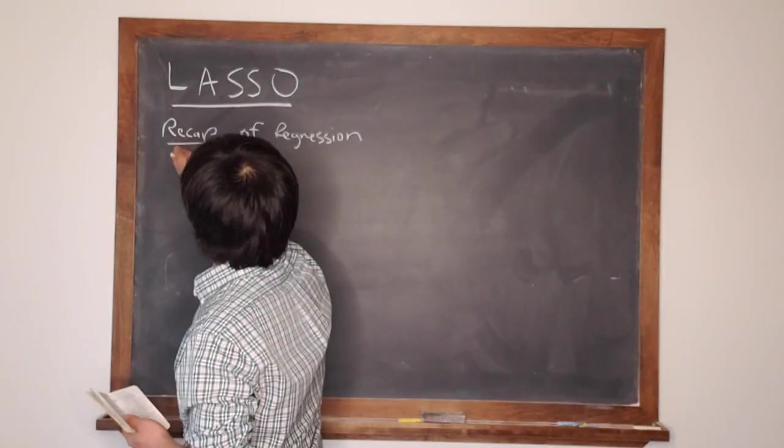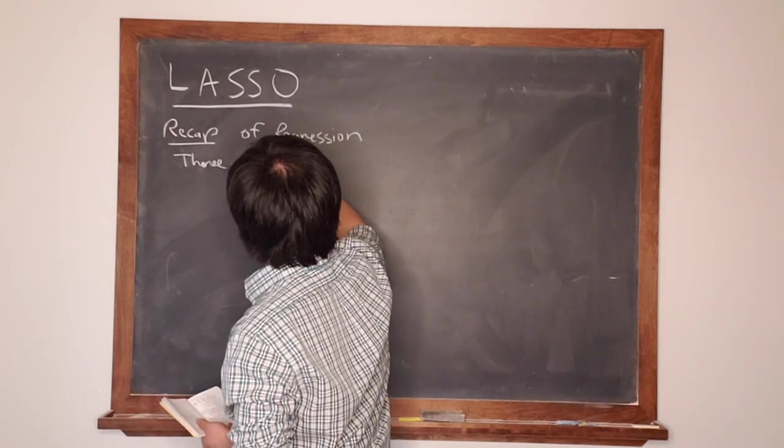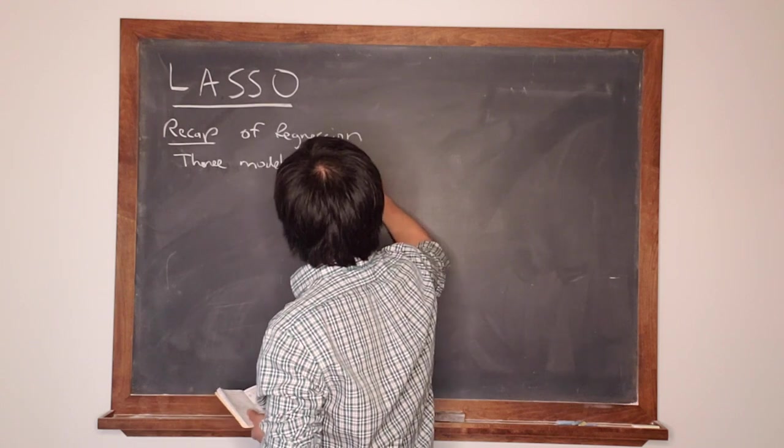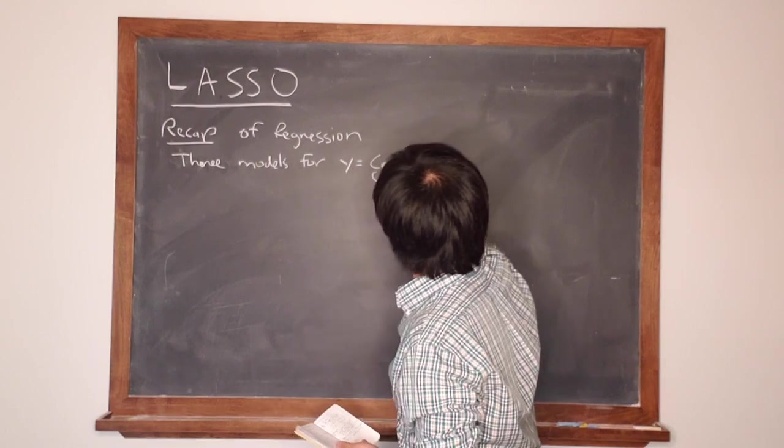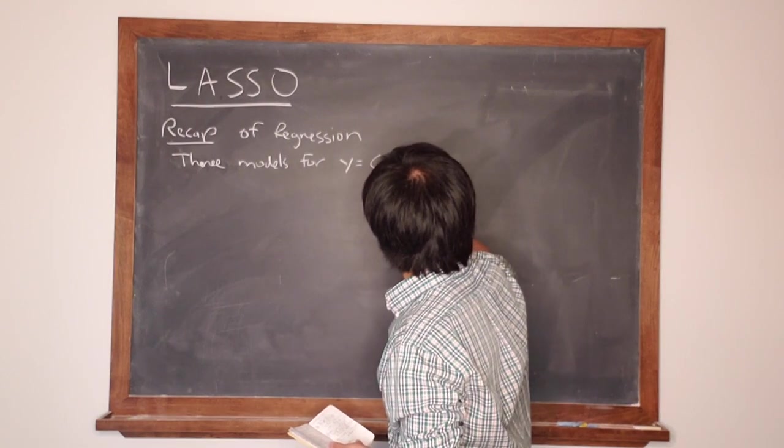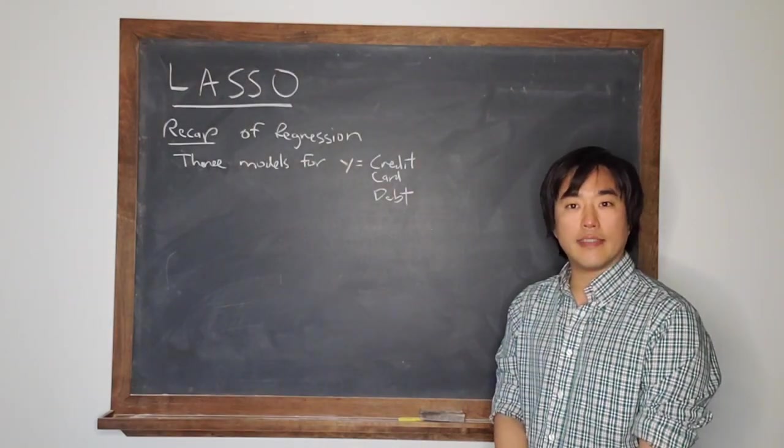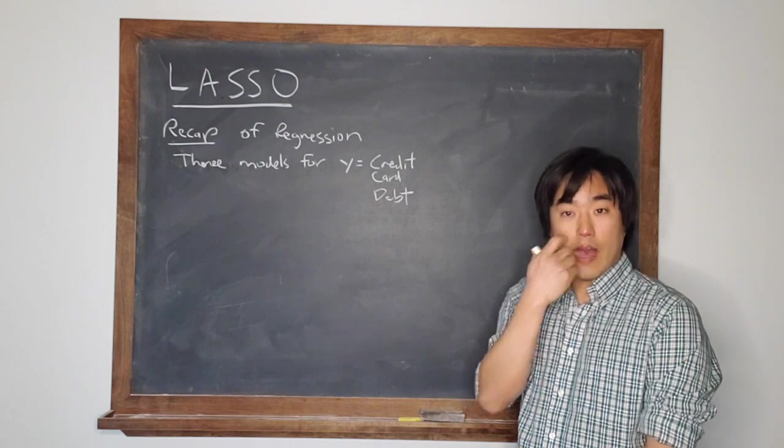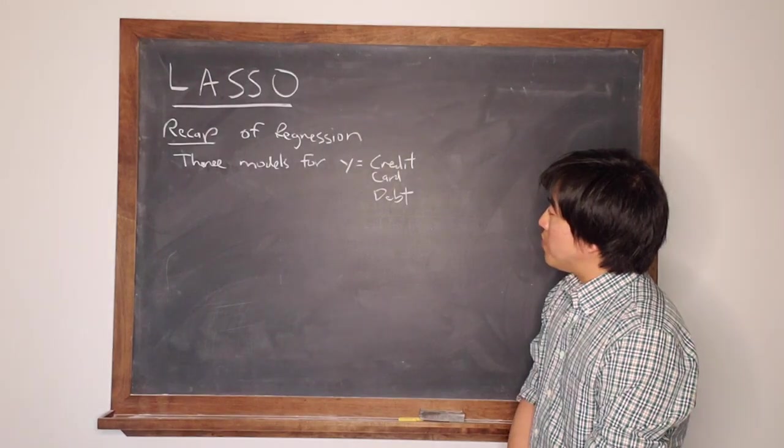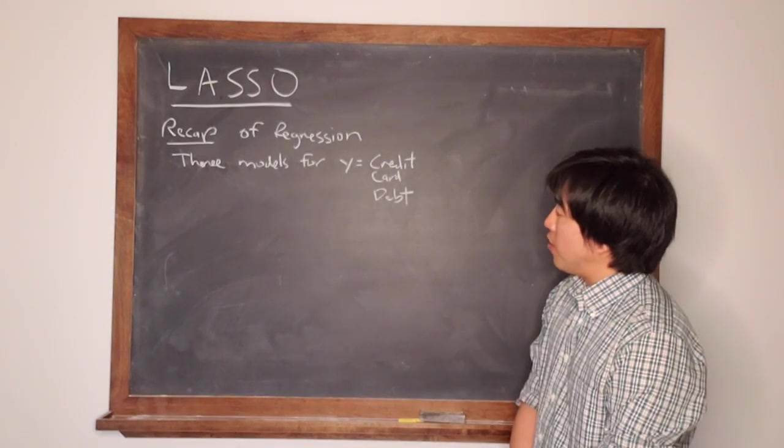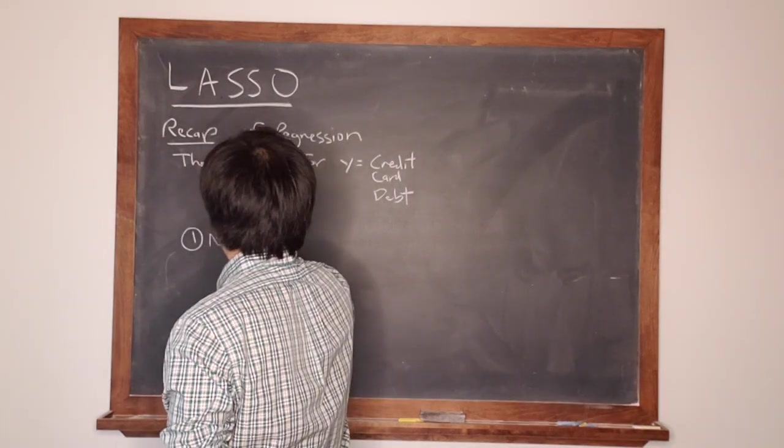In particular, they talk about three models for Y equals credit card debt. This was a simulated data set from the ISLR textbook. The outcome variable is credit card debt. So there are three models that we consider in that rmd file.